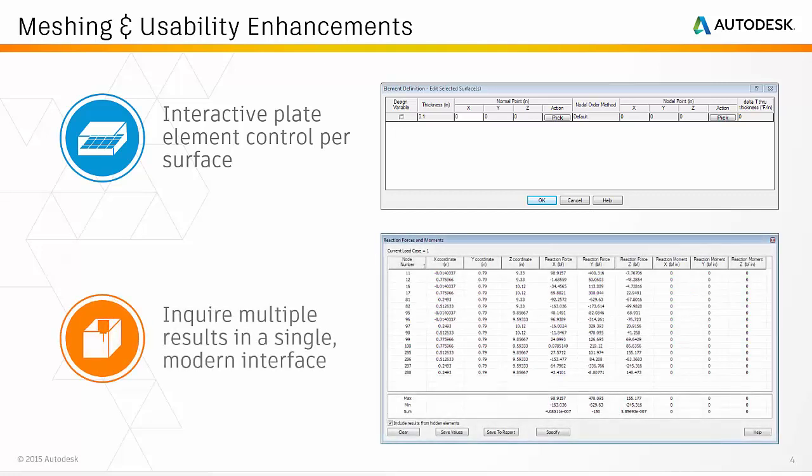When post-processing your simulations there will be cases where you want to inquire on all six components of a certain result type. The 2017 release allows you to inquire on result types such as reactions, internal loads, applied loads, element loads, and stress tensors in a table format with built-in statistics for minimums, maximums, and summation values where applicable.